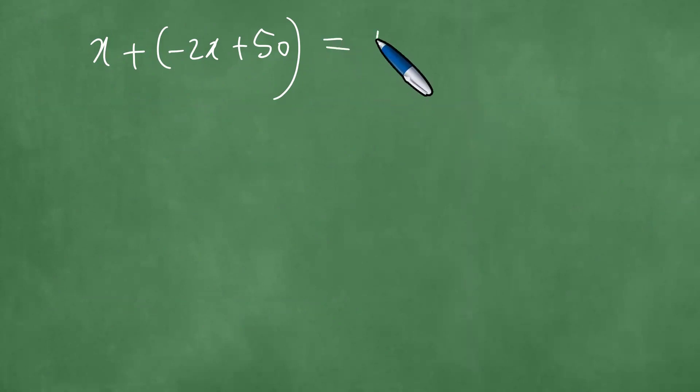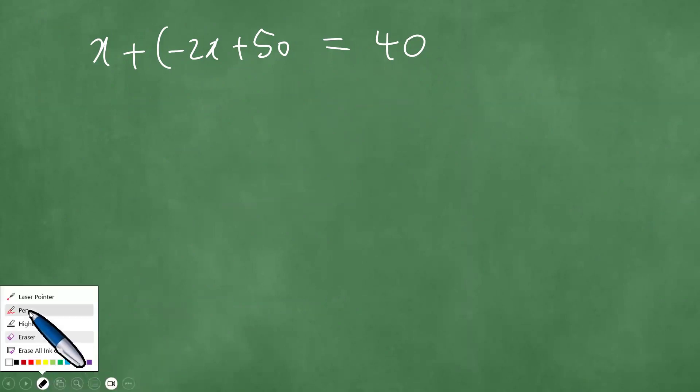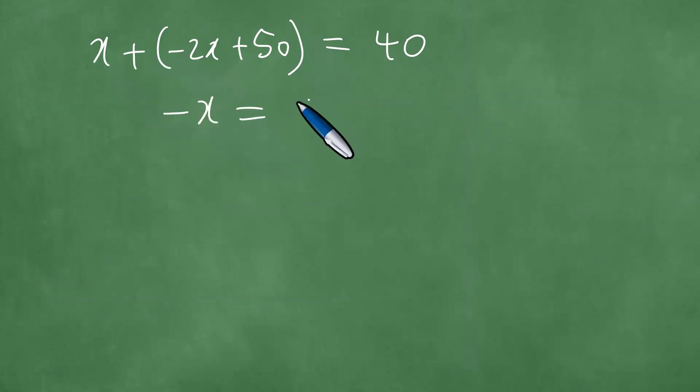And then this is X plus minus 2X plus 50, and the result equals 40. We proceed to simplify this step by step. X plus minus 2X will give us minus X equals 40 minus 50. Minus X equals minus 10. Divide through by negative one, we get X equals 10.